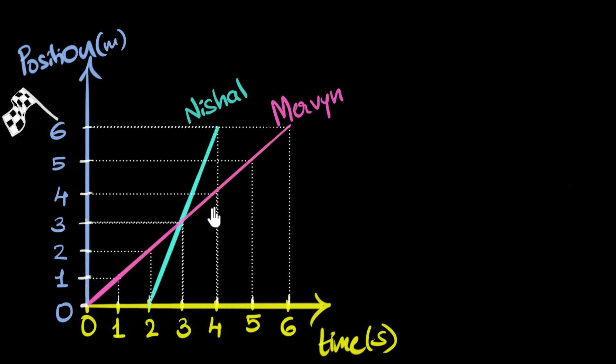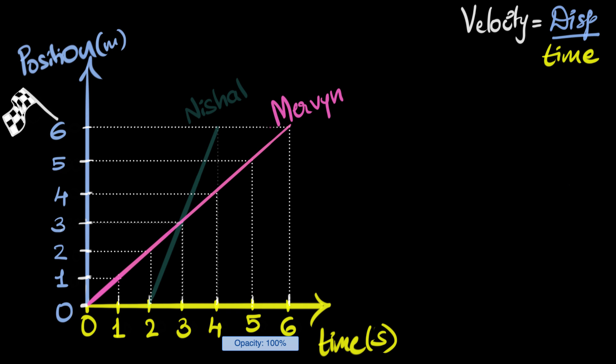So let's see if we can now figure out what were their velocities. Let's start with Mervyn. So what was Mervyn's velocity for the entire race? Well how do we calculate velocity? We calculate velocity as displacement over time. We have the time and we have the displacement. So Mervyn's velocity, we'll call it Vm, we will calculate over the entire six seconds. So over the six seconds, his displacement was six meters. His time was six seconds. And so his velocity turns out to be one meter per second.